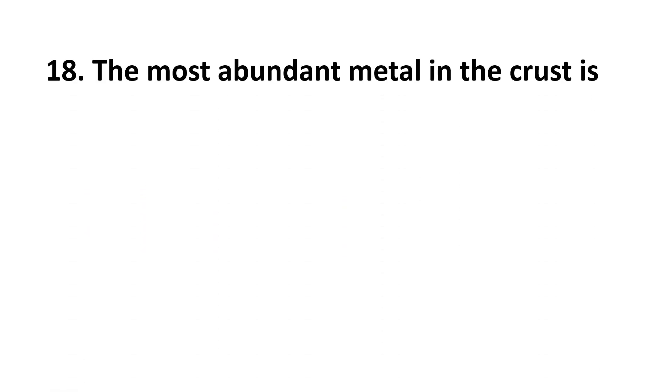18th question: the most abundant metal in the earth's crust is. Choices are A Iron, B Copper, C Nickel, D Aluminium. The correct answer is D Aluminium.